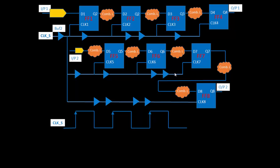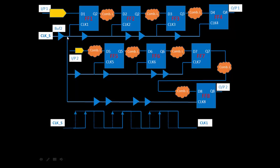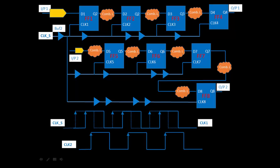Assume this is your clock_S pulse. With some delay, this becomes CLK1. Now taking another clock, say CLK2 — this is the same concept explained in the last part. The difference between the CLK1 arrival and the CLK2 arrival is known as the clock skew.